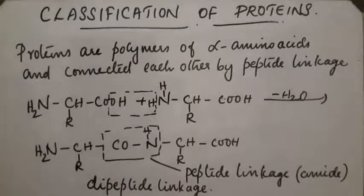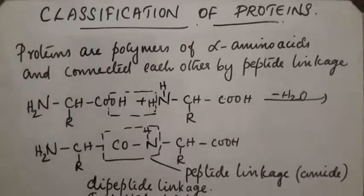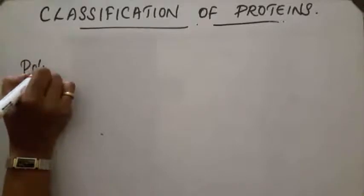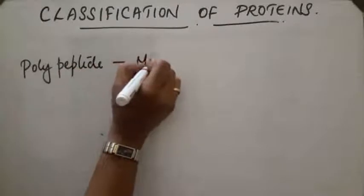If two amino acids react, the linkage formed is called a dipeptide linkage. When one more alpha amino acid reacts, it forms a tripeptide. Then tetrapeptide, and so on. Polypeptide means more than 10 amino acids react and form a compound.